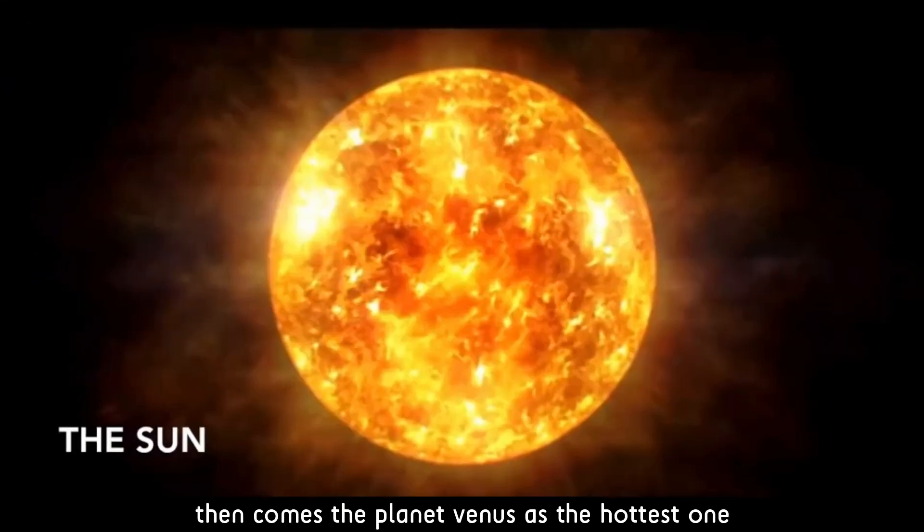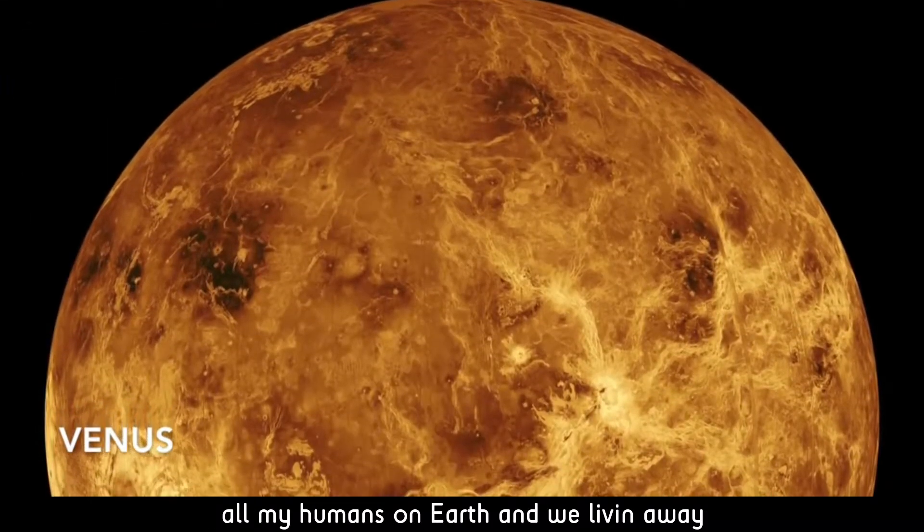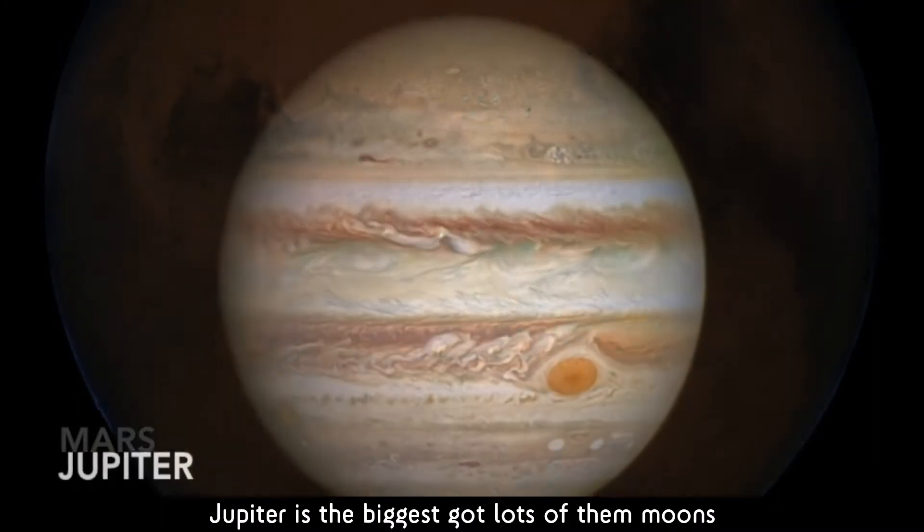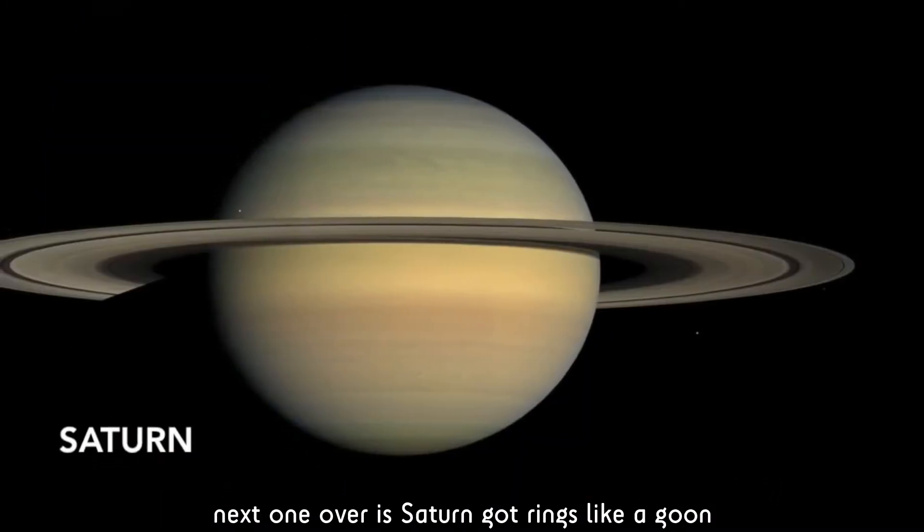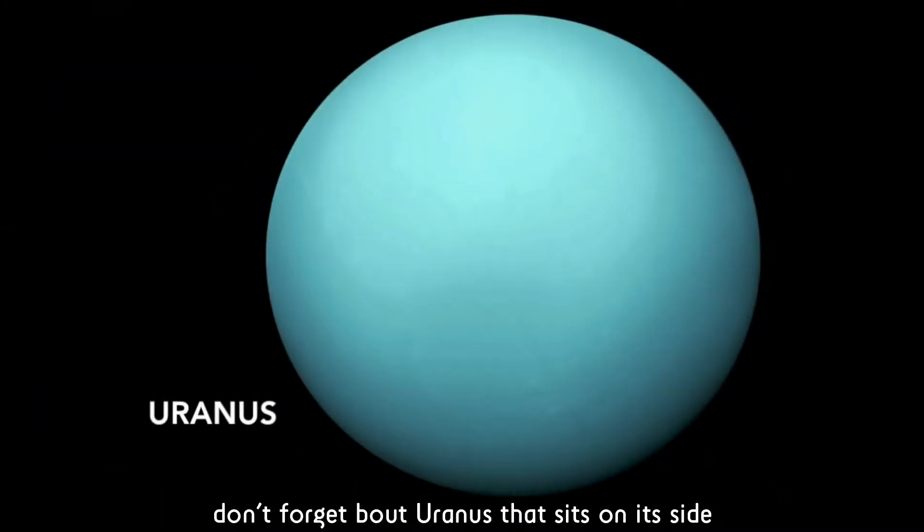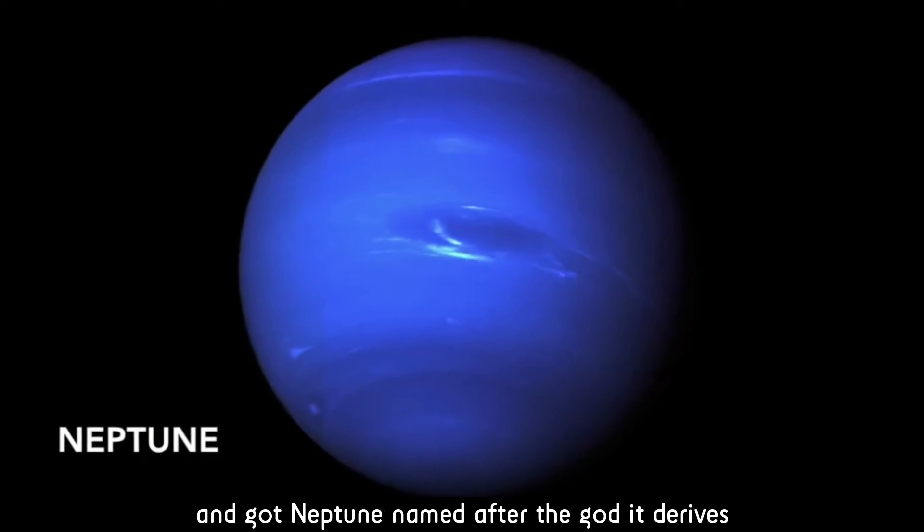We got Mercury close to the sun, then comes planet Venus. This is life, all my humans on Earth and we living away. Got us looking at Mars, it look red in the day. Jupiter is the biggest, got lots of moons. Then it's Saturn, got rings I could go. Don't forget about Uranus, it sits on the side. They got Neptune, named after the god of the tides.